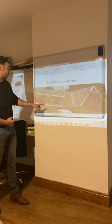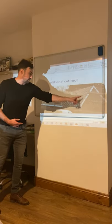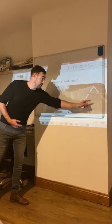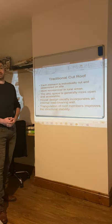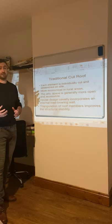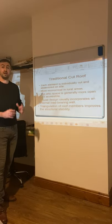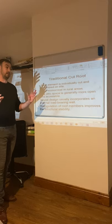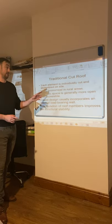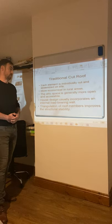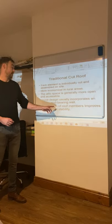Here's an example of a traditional cut roof — you often see this in a country setting. We have dormer windows, fascia, valleys, valley boards, jack rafters, and gable ladders tying everything in. There'll be straps to tie the gable ladders into the concrete block. Each element is individually cut. The attic space is generally more accessible, and it's much easier to convert at a later stage than a truss roof — you're not supposed to cut a truss roof as they're engineered not to be touched.